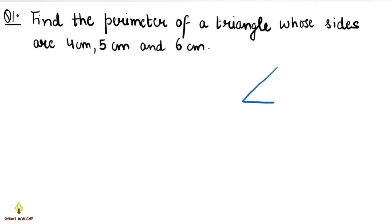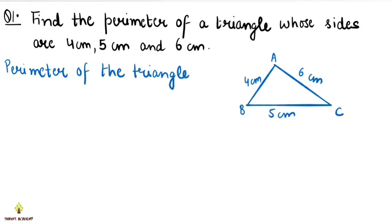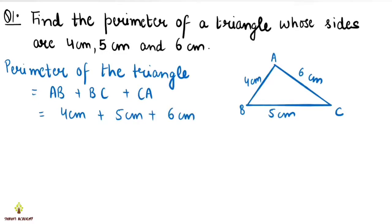So we will find the perimeter of a triangle by adding all sides: AB plus BC plus CA. The sides are 4 cm, 5 cm, and 6 cm. So 4 plus 5 is 9, and 9 plus 6 is 15. So the perimeter of triangle ABC is 15 cm.